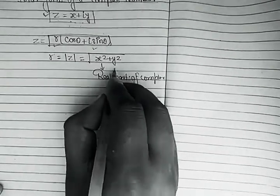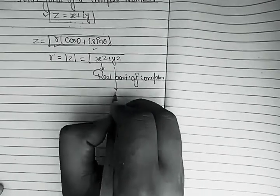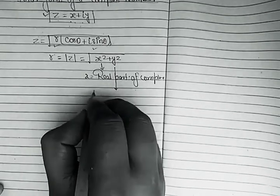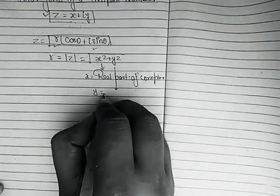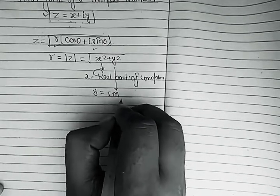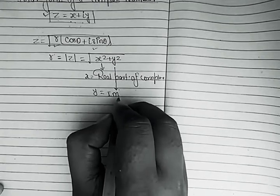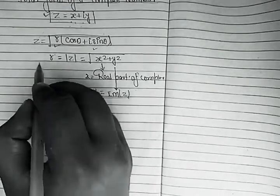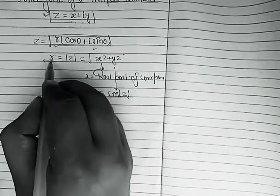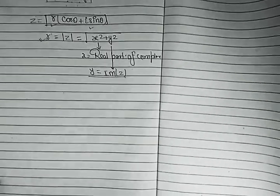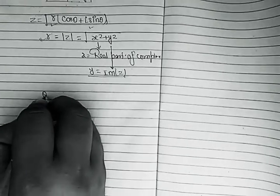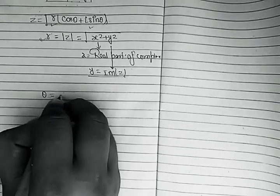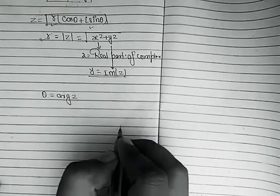x is the real part and y is the imaginary part of the complex number. First of all we need to find out r, and after that we need to find out θ. θ is the argument of z.